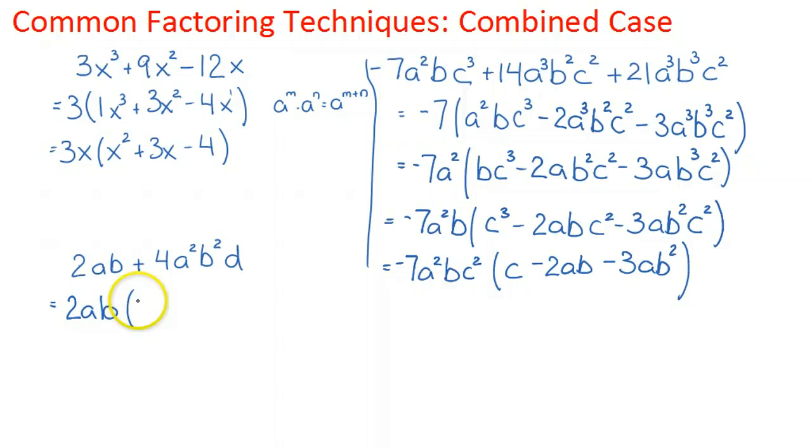So when I factor this out, 2 times what gives me 2, it's 1. a times what gives me a, it's 1. b times what gives me b, it's 1. So we're left with 1. Be sure to write the 1 there. Sometimes students will leave that out. And then we have 2abd. And we're done.